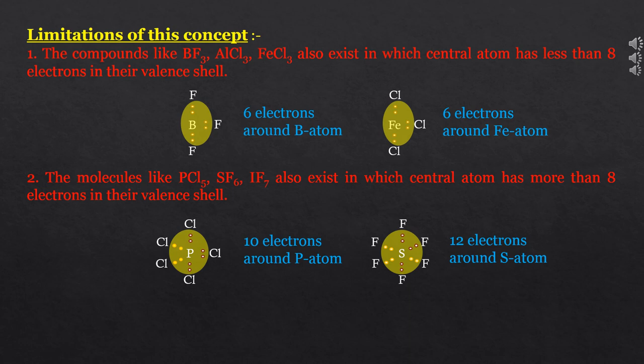Third limitation: even noble gases form compounds such as XeF2, XeF4, XeF6, etc. So even noble gases, which were considered stable, form compounds. Thus, tendency to acquire noble gas configuration is not the only reason for atoms to combine with each other — there must be another reason also.